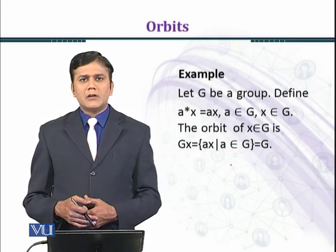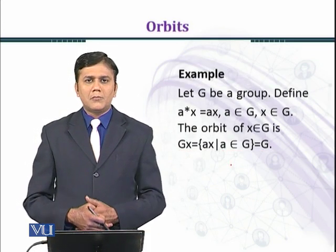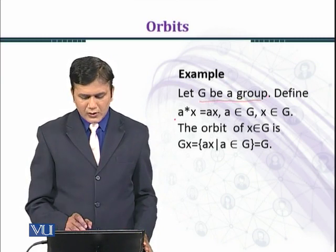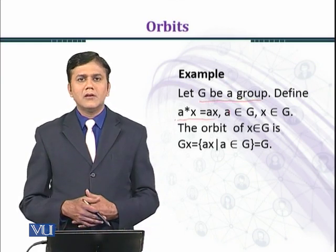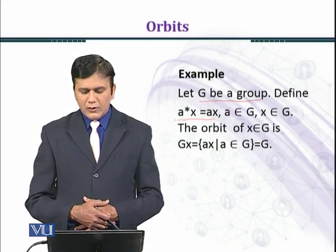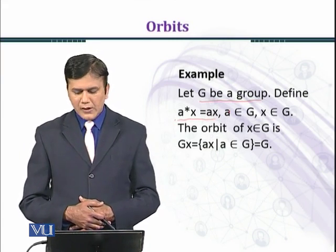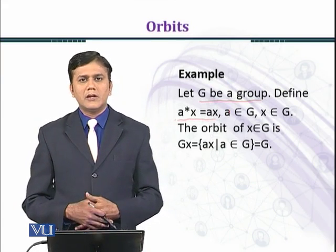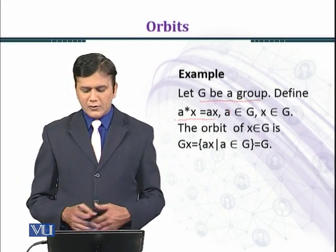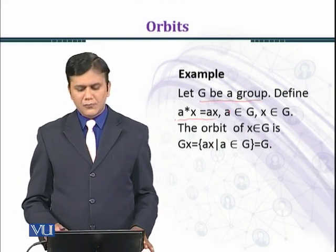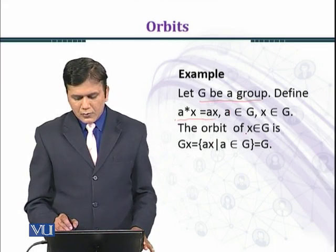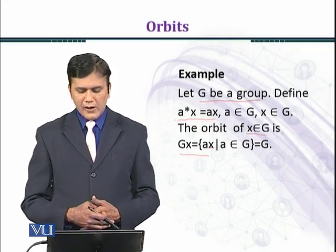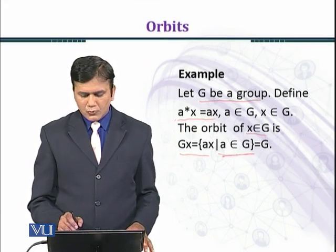Now we consider some examples of orbits. Let G be a group. Define a ⋆ x equal to a·x, where a belongs to G and x belongs to G also. This is the translation action — the action of a group on itself. The orbit of x belonging to G is G·x equal to the set of all a·x such that a belongs to G.